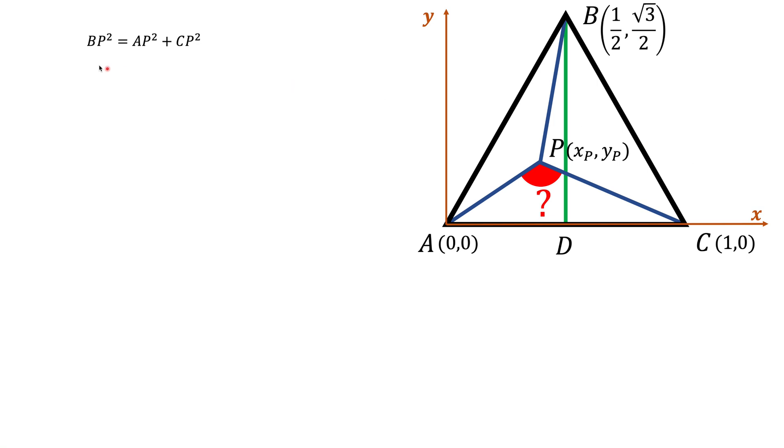In general, when you have an equilateral triangle with side A, the altitude BD will be the square root of 3 over 2 times that A. The next thing we want to do is get this equation. We want to find BP squared, AP squared, and CP squared.